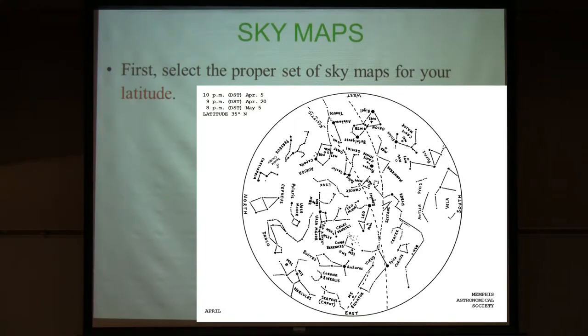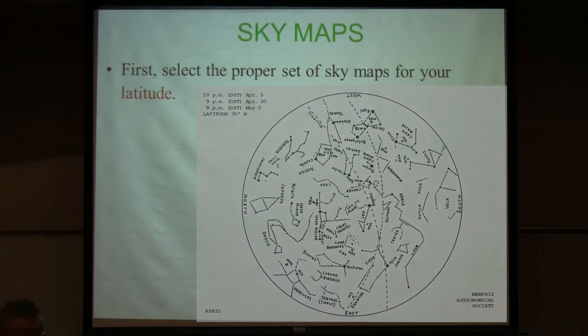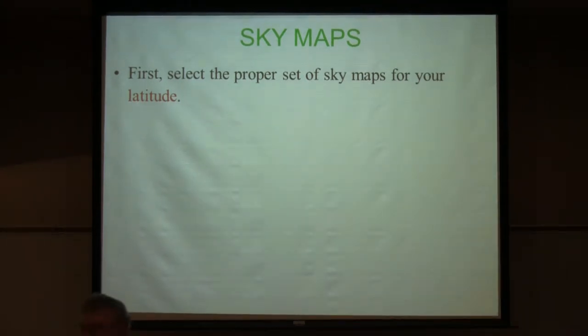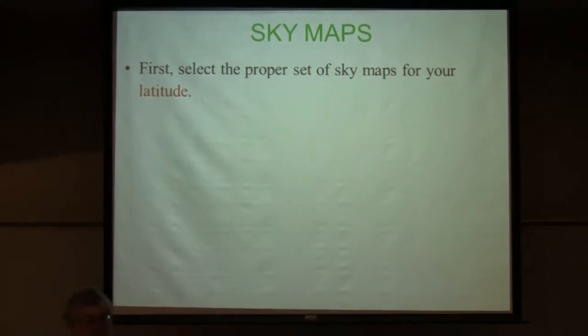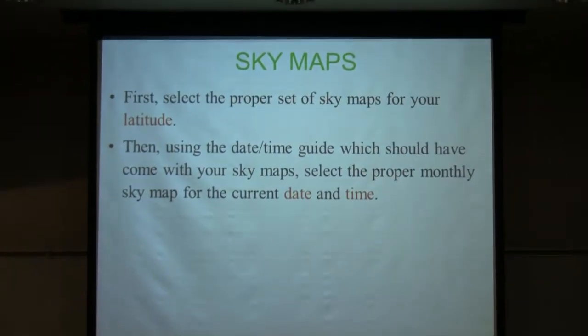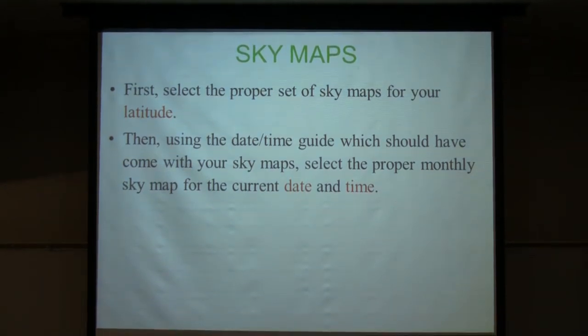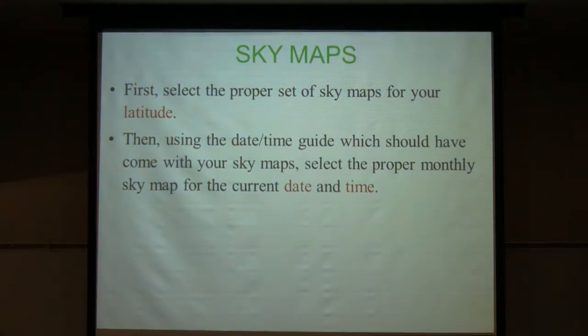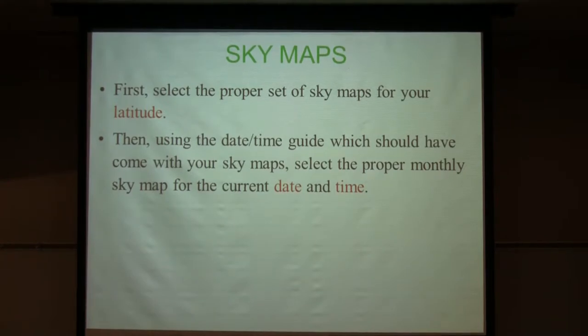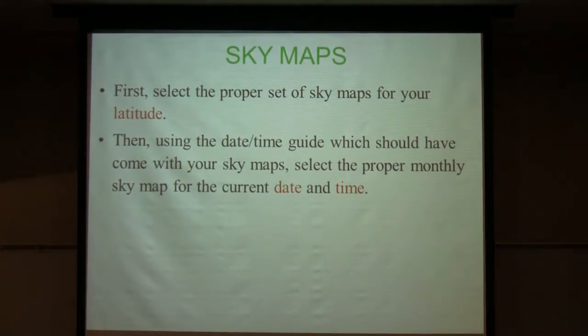First you've got to get a sky map that suits your latitude. These are set for around 40 degrees north latitude; the ones in the Messier guidebook and the freebies we have are for 35, which is the latitude of Memphis. We'll see later how moving around on the earth to different latitudes affects what you see from the sky in a very dramatic way. Then you use the date-time guide which either comes with the Messier guidebook or is printed around the edge of the planisphere.